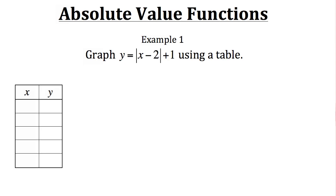In example 1, they want us to graph y equals the absolute value of x minus 2 plus 1, by first using a table. To graph this using a table, we need to find a few points, so we need to make a table of values. Let's try x values of 0, 1, 2, 3, and 4.